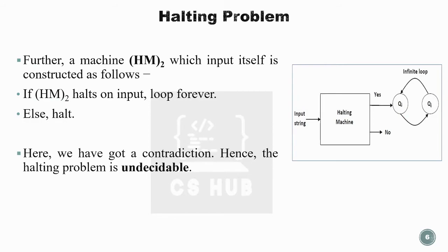This leads to a contradiction. If HM2 halts on its own input, then it loops forever; and if it loops forever, then it halts. This contradiction means the halting problem cannot be solved. There does not exist a Turing machine that can tell whether a particular Turing machine description halts on an input or not. Therefore, the halting problem is undecidable.